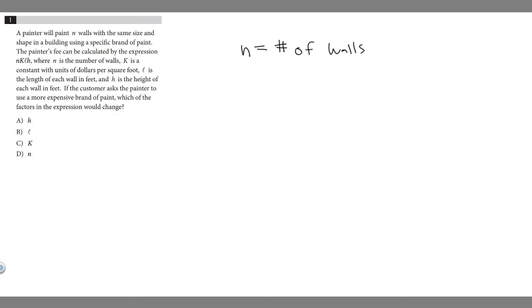k is a constant with units of dollars per square foot, and length is the length of each wall in feet.